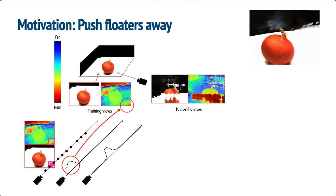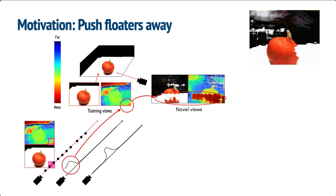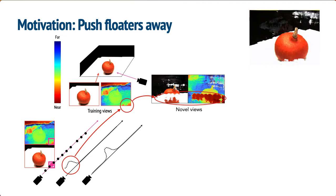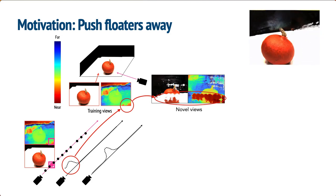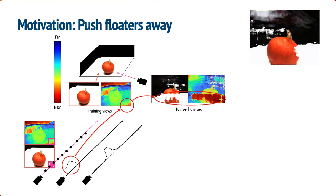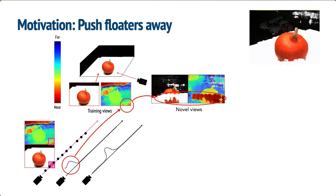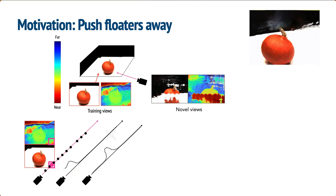However, we found that the NeRF model usually predicts the least overlapped region with near-camera floaters. But this kind of density distribution is not ideal, as it will place floaters in front of the camera.